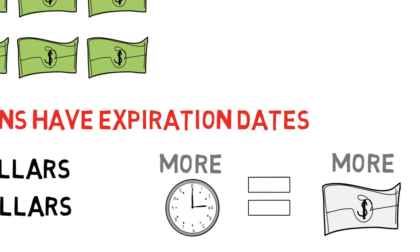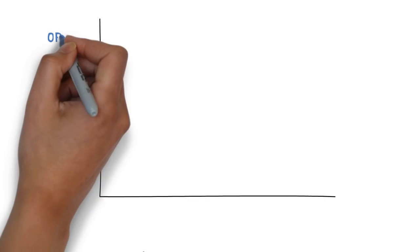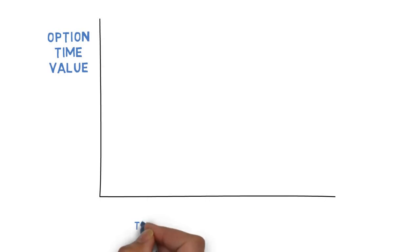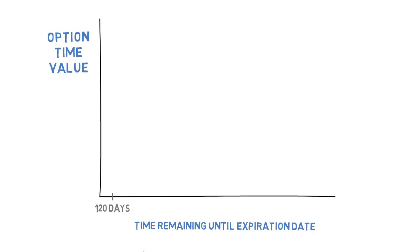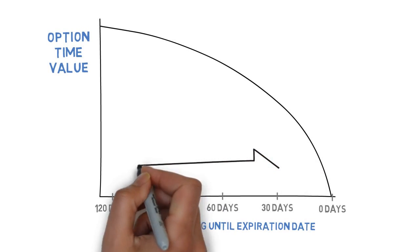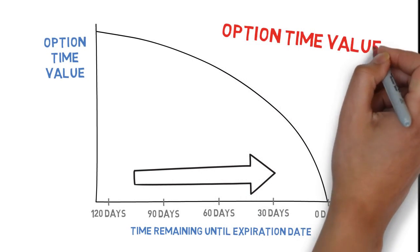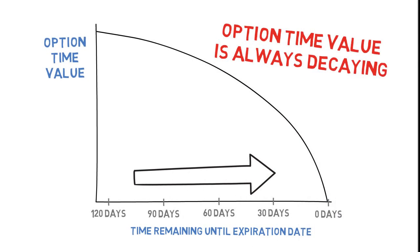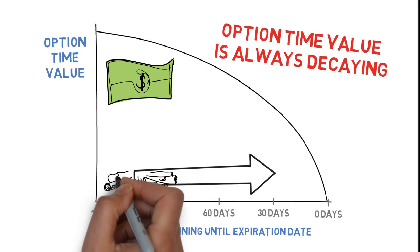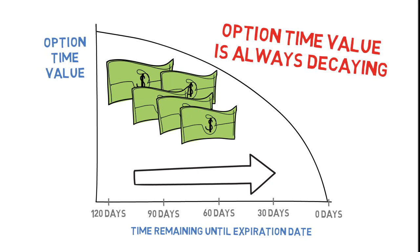As time passes, an option's time value will decay — this is known as time decay. The decay curve is exponential, not linear, meaning that as you get closer to expiration, time decay will rapidly speed up. The important thing to understand is that an option's time value is always decaying, 100% of the time, every day, every hour. This can be your worst enemy if you trade options the wrong way, or it can be a huge advantage if you trade them correctly.